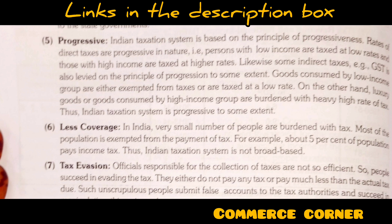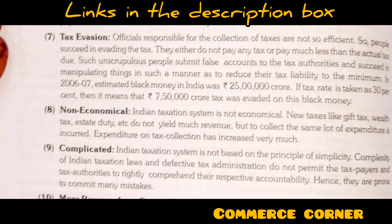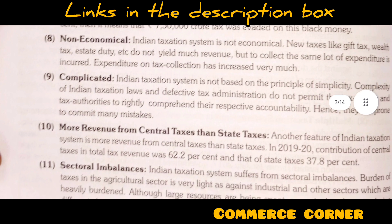The next point is less coverage — mostly only 5% of people pay tax. Next is tax evasion, which means to save tax or avoid paying it. If the official responsibility for tax collection is not efficient, people evade tax or find ways to save on their tax liability.